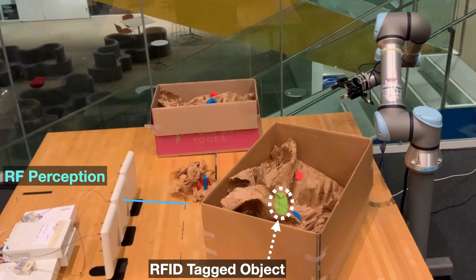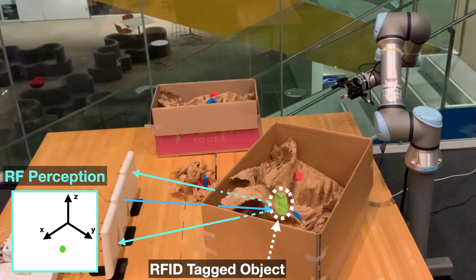Unlike visible light, RF signals can traverse through occlusion. This allows our system to locate and identify the object, as you can see in the bottom left.